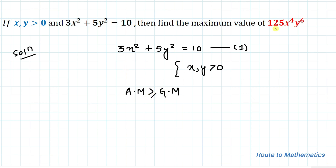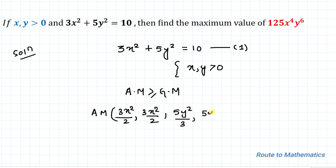For that, since we have x⁴ in the expression, we write 3x² as the sum of two terms: 3x²/2 and 3x²/2, so that we get the x⁴ term on the GM side. Similarly, since we have y⁶, we split 5y² into three equal terms: 5y²/3, 5y²/3, and 5y²/3, so that we get the y⁶ term on the GM side.